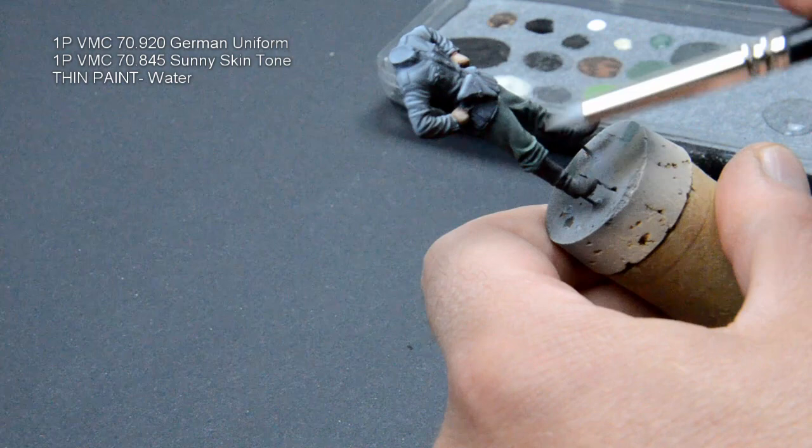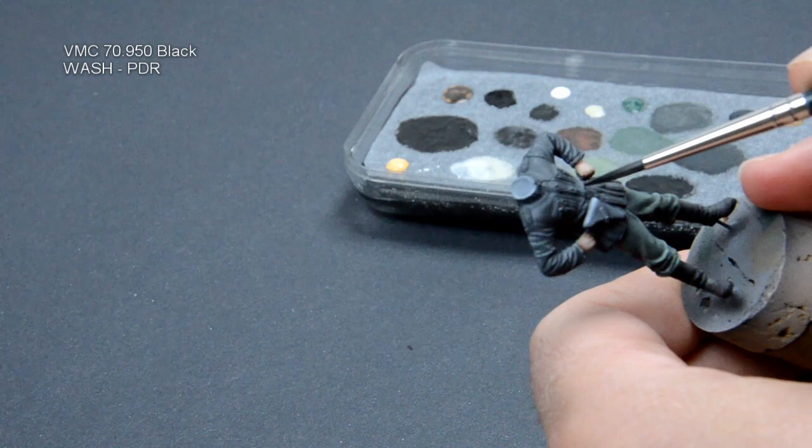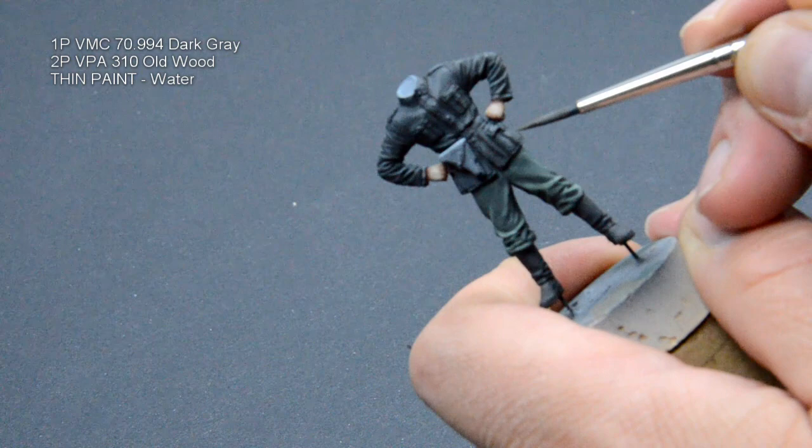For the black jacket the base color was a mix of dark gray and old wood. Again a glaze was applied in two coats. For the shadows I used black as a wash with paint drying retarder. I added more old wood to the base mix and did some highlights.